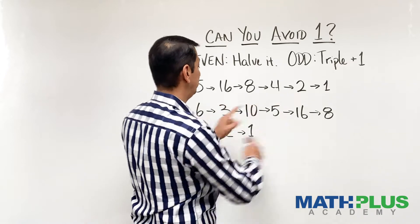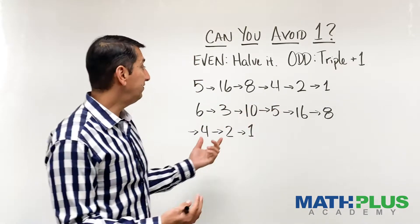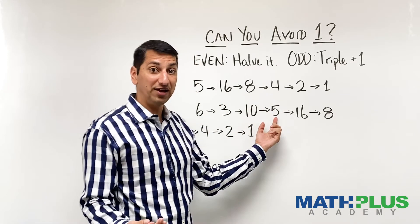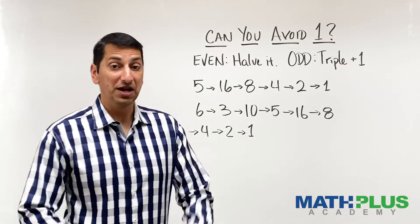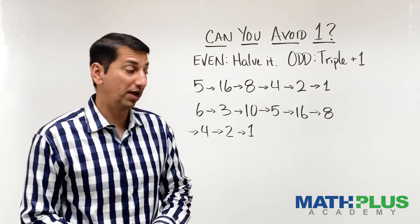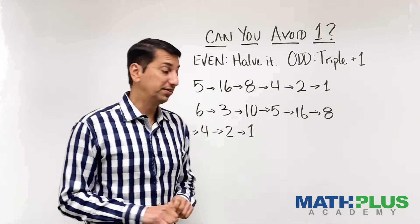Five, 16, eight, four, two, one. So once we see a number that we've already figured out, we know it's going to happen. And that can make it easier for you to figure out, am I always going to get to that four, two, one loop or not? So that's something to think about.